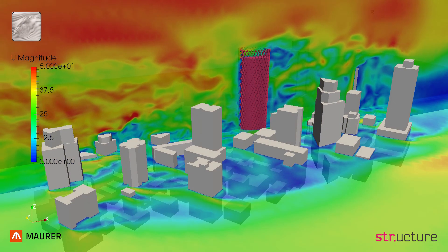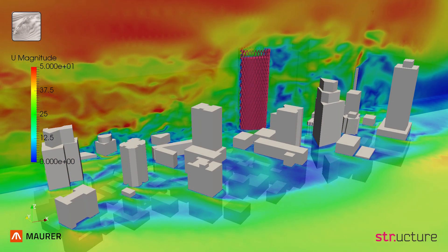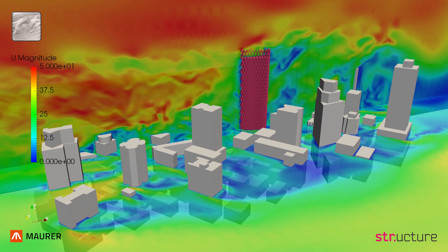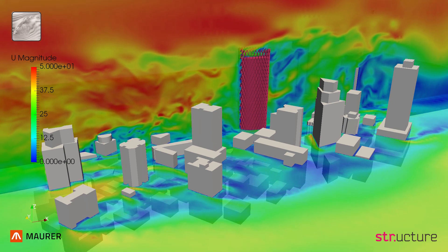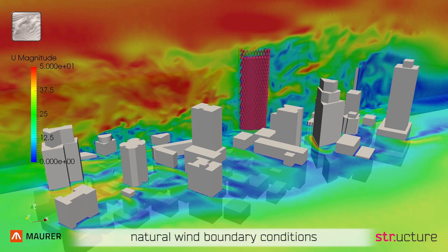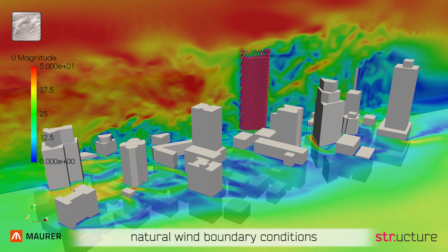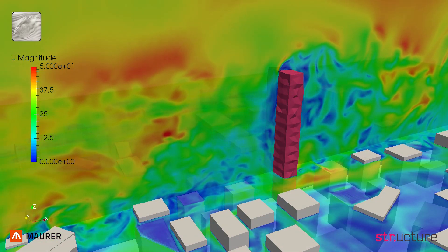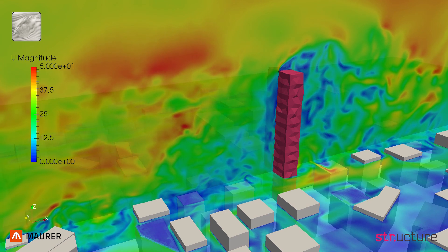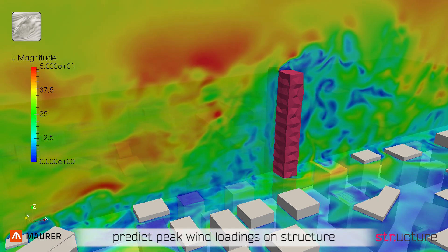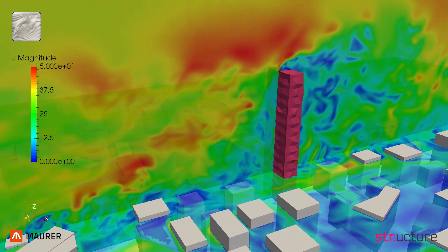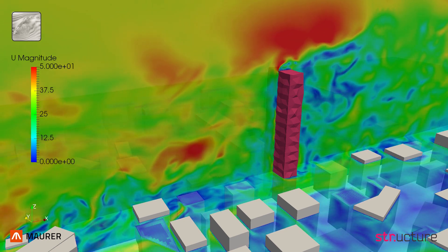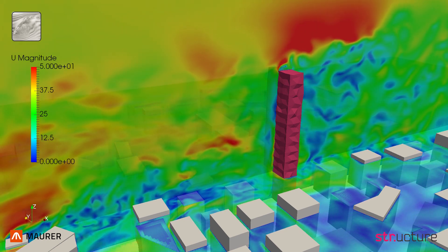Natural wind gusts are created by ground roughness and the signature turbulence of buildings. An innovative wind generation technique allows the use of natural wind boundary conditions for the virtual wind tunnel. Sophisticated CFD simulations are used to predict peak wind loadings on the structure. Time periods of several wind storms are computed to assess statistically safe extreme values.